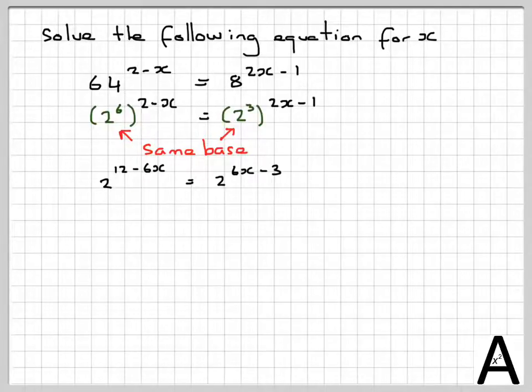We do 6 times 2, which is 12, 6 times minus x, which gives me minus 6x, 3 times 2, which is 6x, and 3 times minus 1 gives me minus 3.